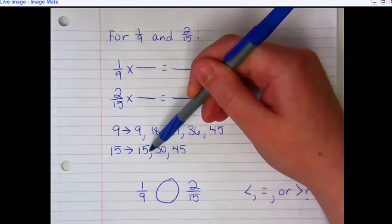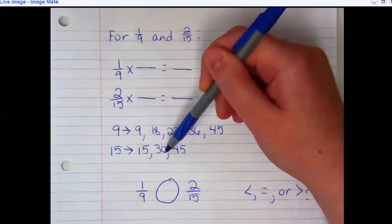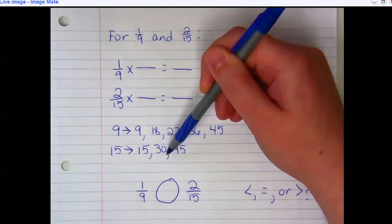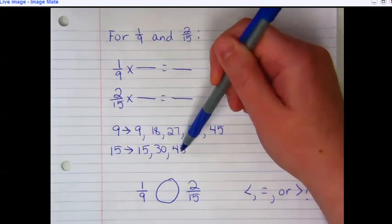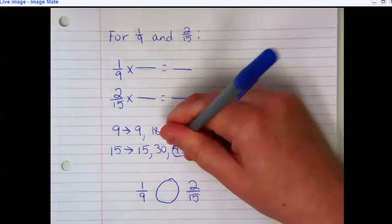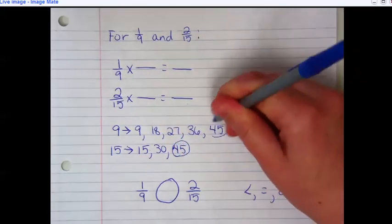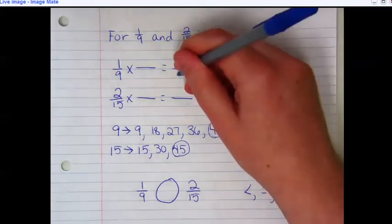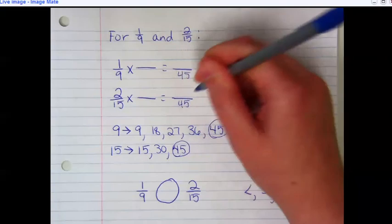So I did my multiples for 15 first. I think it's easier to do 15 because it's a larger number. And so 15 times 1 is 15, 9 won't go into 15. Times 2 is 30, 9 doesn't go into 30. Times 3 is 45, 9 goes into 45, so I'll stop there. And then I just showed my multiples for 9 until I got to 45.